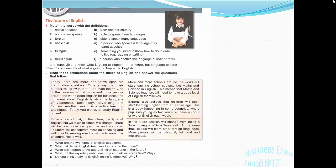And now let's come to our book and speak about the future of English. Match the words with their definitions: native speakers, non-native speakers, foreign, basic skill, trilingual, multilingual. Let's do it. A native speaker is a person who speaks the language of their parents. Non-native speakers are people who speak a language they learnt at school. Foreign means from another country. Basic skills are something you need to know how to do in order to live, example reading or writing. Trilingual means able to speak three languages. Multilingual means able to speak many languages.